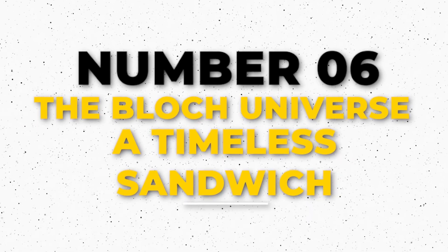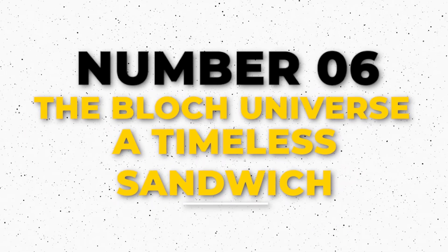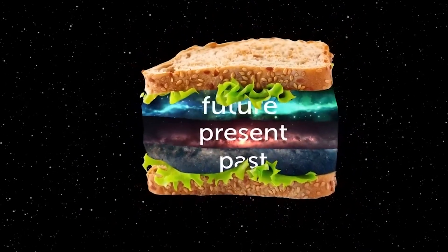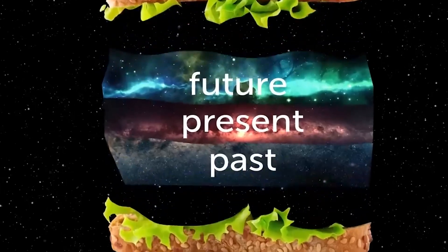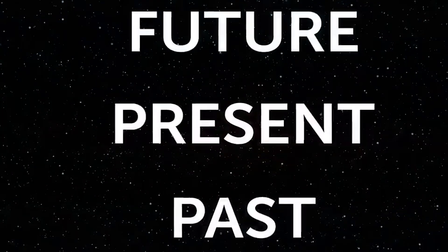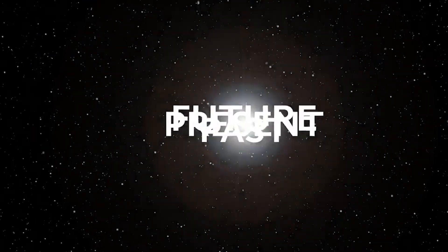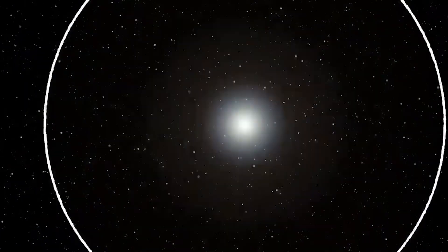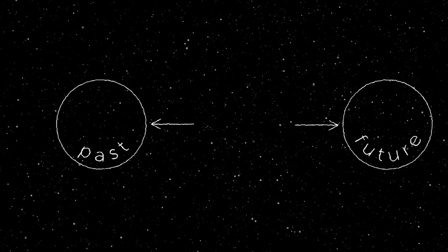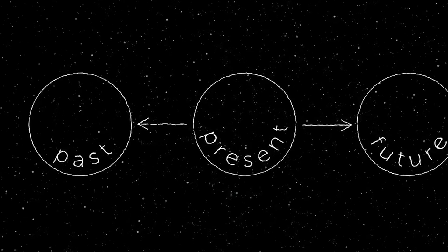Number 6: The Block Universe – A Timeless Sandwich. What if the past, present, and future all exist simultaneously? That's the idea behind the Block Universe, a theory that extends Einstein's relativity. In this model, time is like a sandwich, with each slice representing a different moment. All these slices – past, present, and future – exist at once.